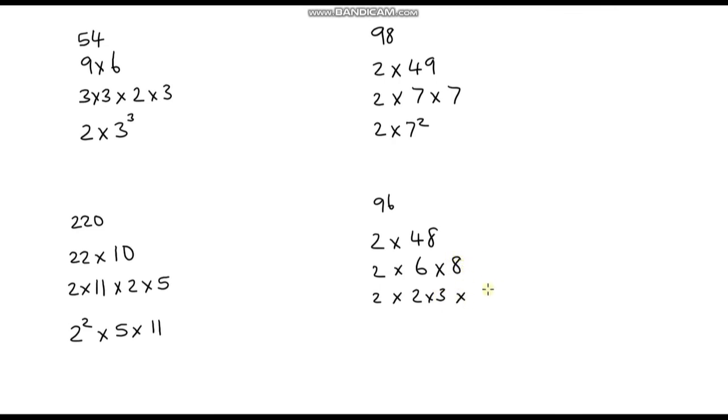And I know that 8 is 2 times 2 times 2. We are done, but we just need to express this in index notation. So we've got a lot of 2s: 1, 2, 3, 4, 5 twos, so we can write that as 2 to the power of 5 multiplied by 3, and we are done.